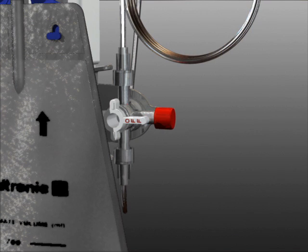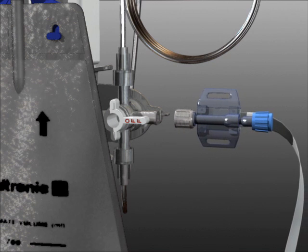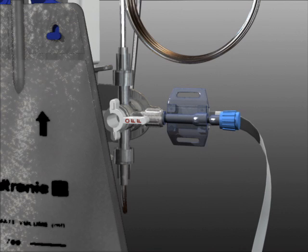A pressure transducer can be attached to the main system stopcock by removing the red cap and threading the transducer onto the stopcock lure fitting.